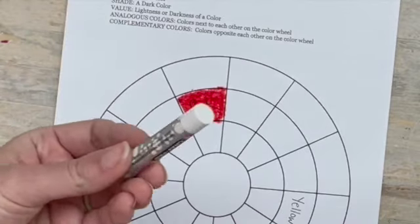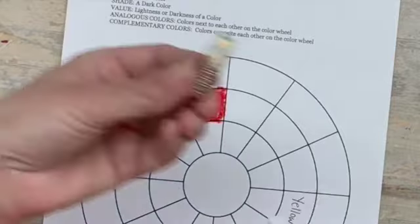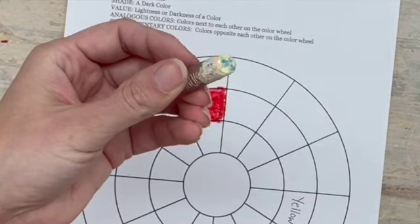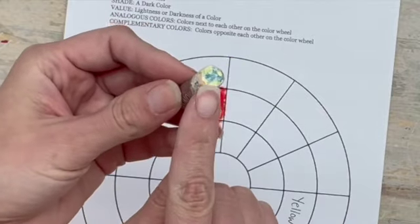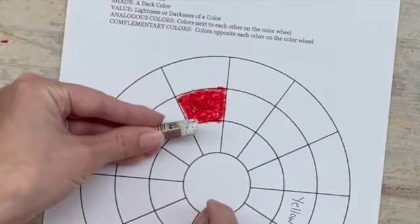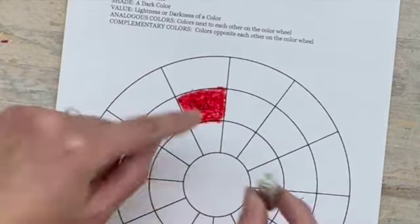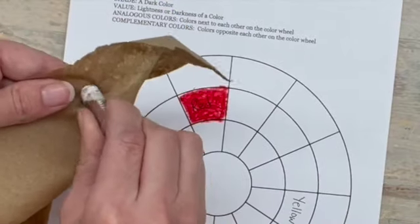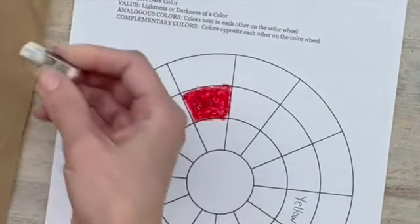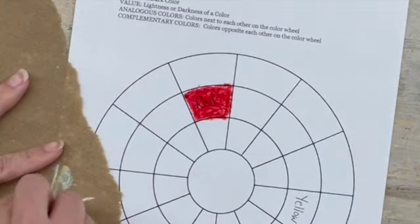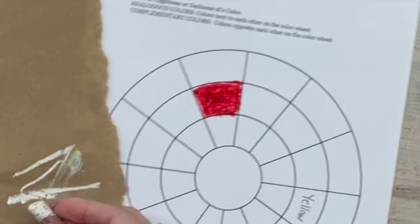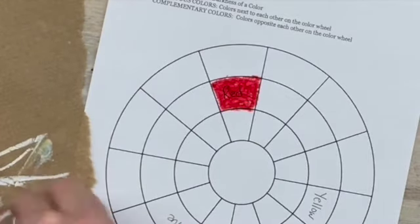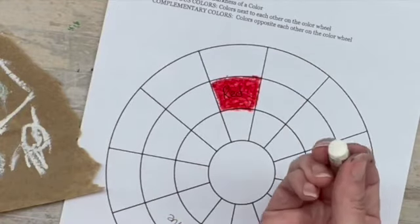Now because my white is brand new it looks really pristine. After a while it might end up looking like this. This is what some of the pastels end up looking like towards the end of the project. Now I would not want to apply this onto my paper because I'd get all these other colors there and it would make a mess. So you should always have a piece of paper towel handy to clean off your pastel with. Really that just means wiping it and you're just wiping the color off. Now you can see it's nice and clean and I'd be able to use it.